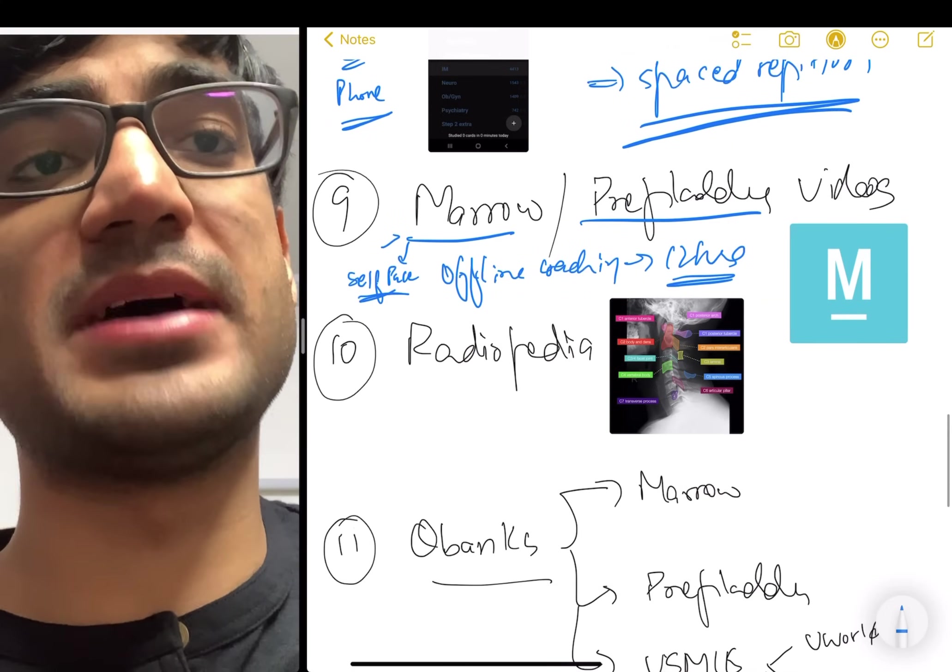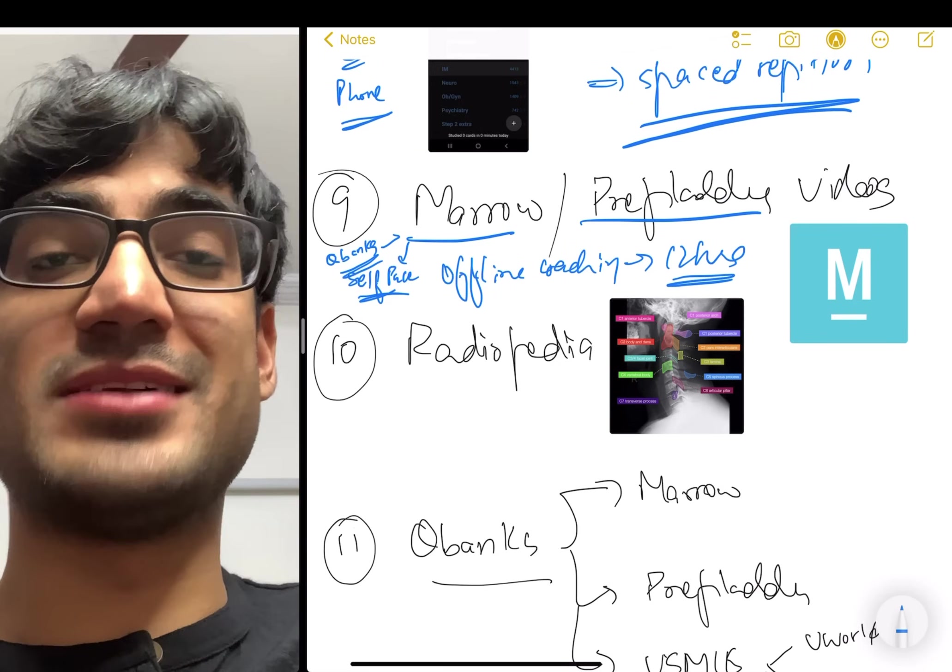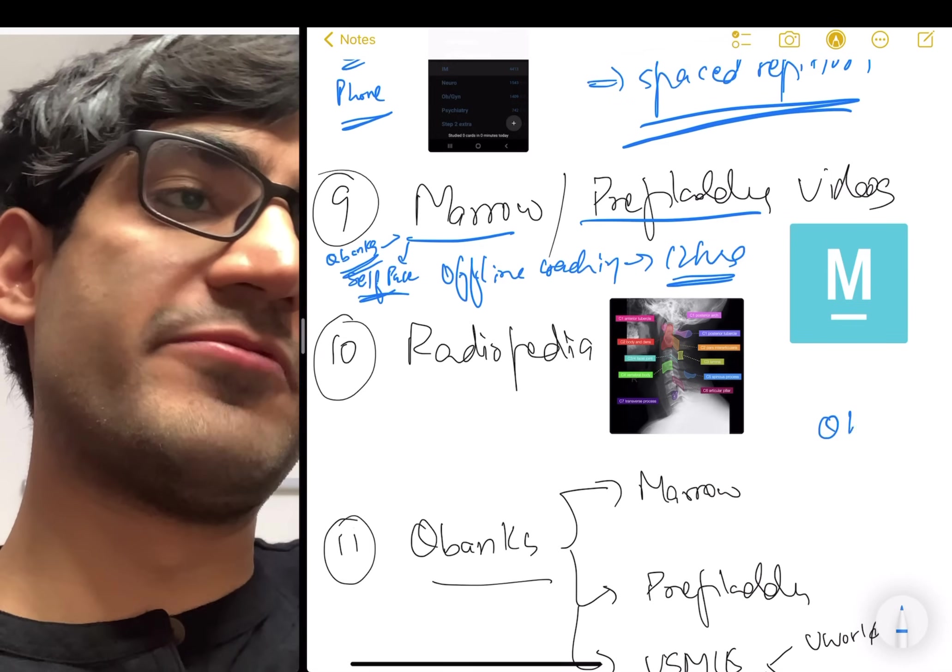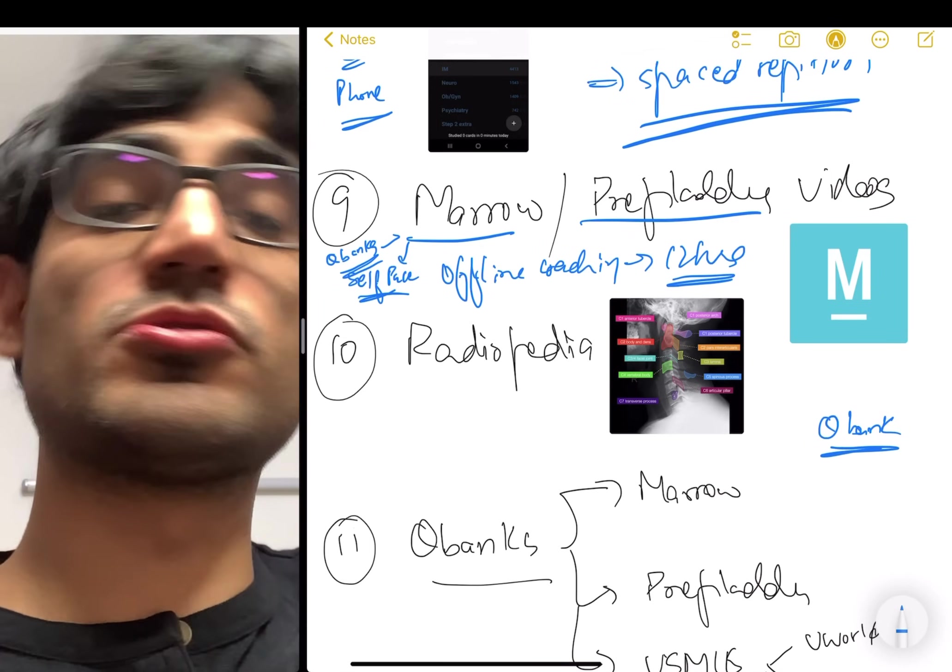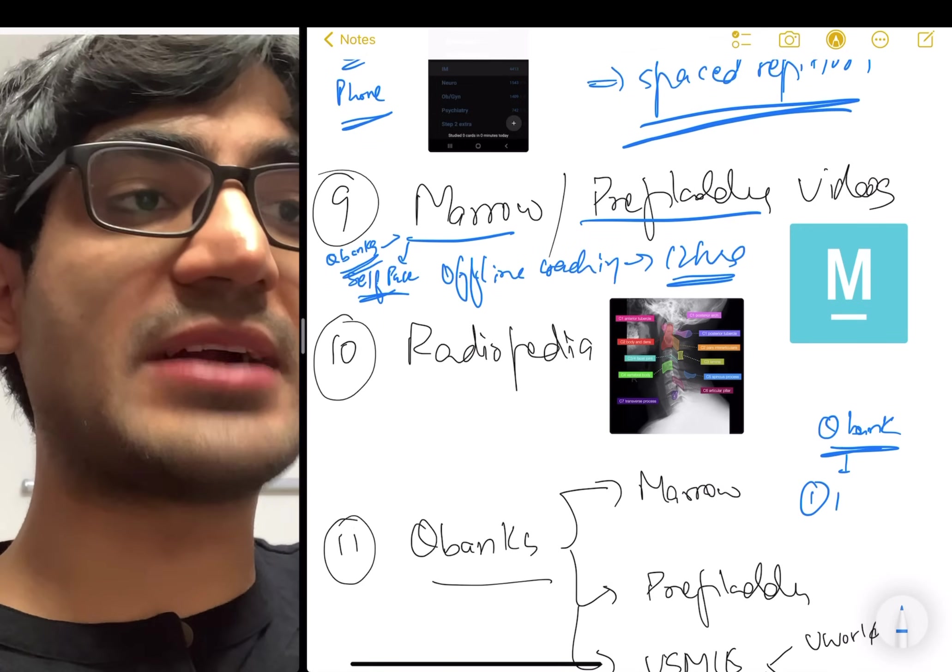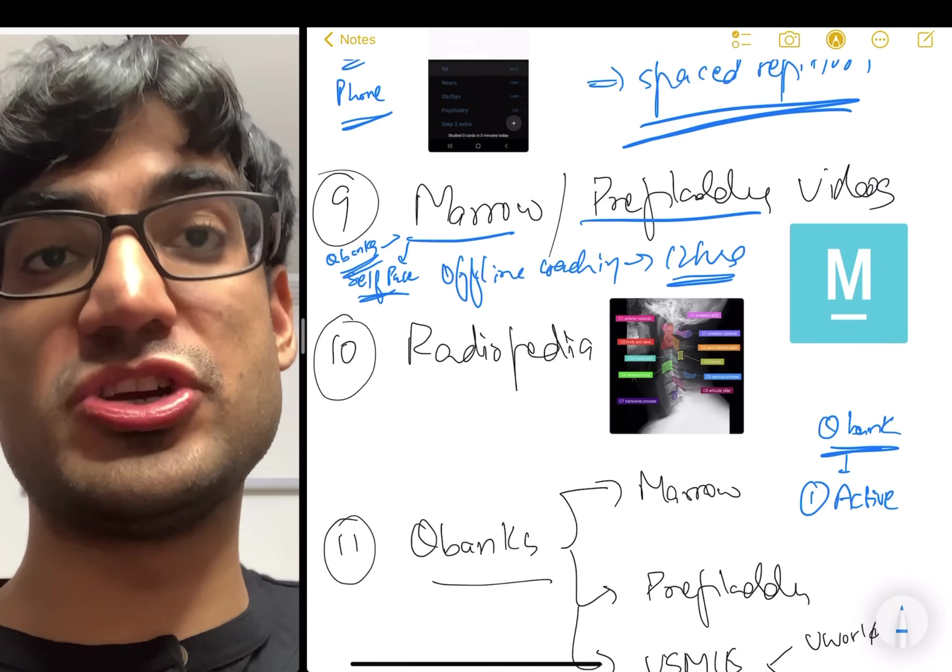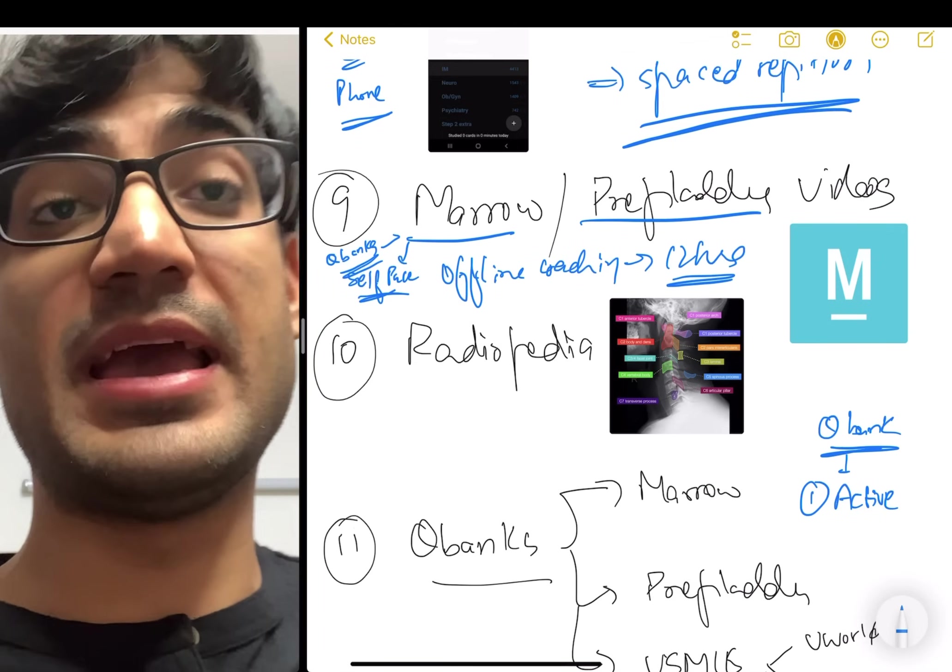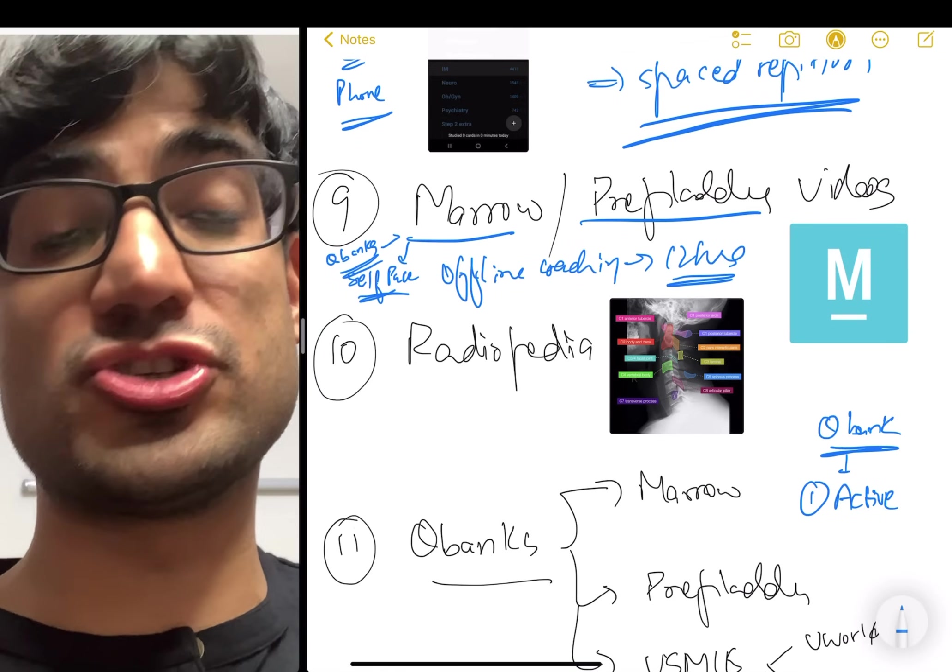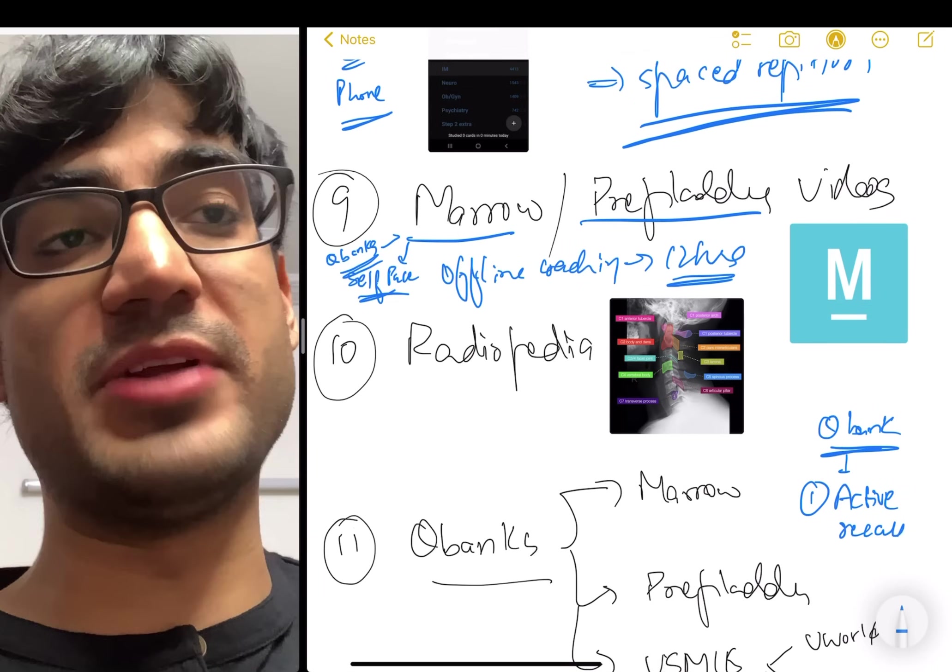And they also have question banks to do. So you can do those question banks and question banks are very helpful. In Marrow and Prep Ladder, the reason question banks are so helpful is because they stimulate two things. The first thing they stimulate is active recall. And active recall is this phenomenon where you try to pull out information from your head to answer something. And active recall has been shown to improve retention far more than repetition. So that's very good with a question bank.